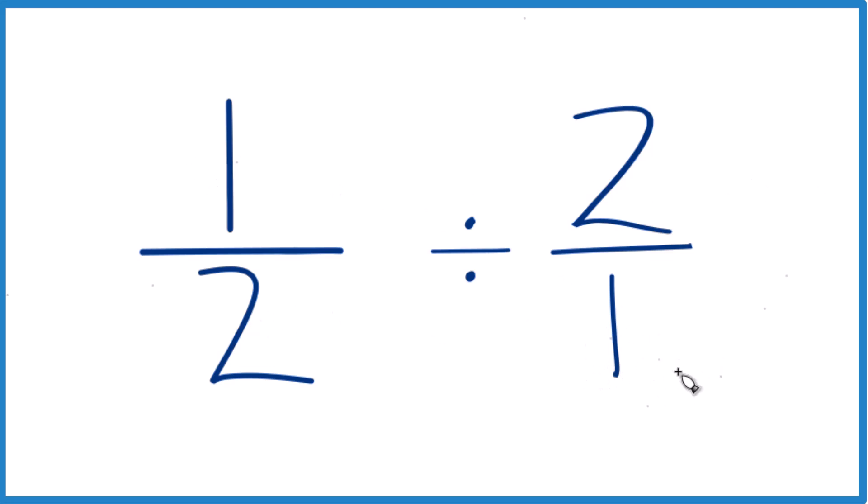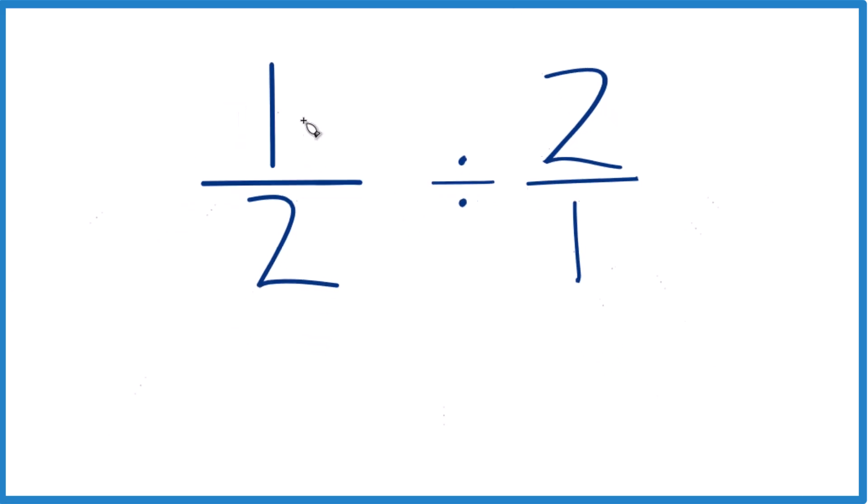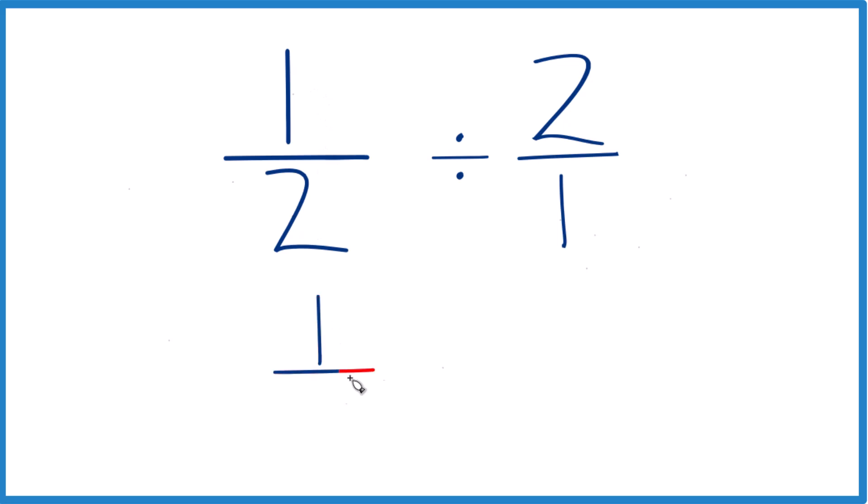And what we can do is we can take one half and instead of division, we can multiply if we take the reciprocal of two over one or of two. So the reciprocal, we take the numerator, move it to the bottom, denominator to the top. So we have one over two.